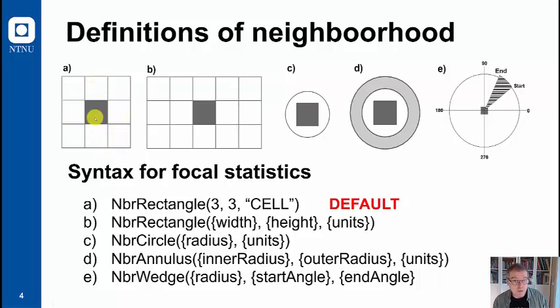This rectangle can be of any form and you can set this up with width and height options. For instance, a rectangle which is 5 in width and 3 in height. You can also have circles defined by a radius, an annulus where you're not concerning the pixels most close to the kernel pixel but those in an outer radius, or a wedge which is a specific sector in a particular direction.